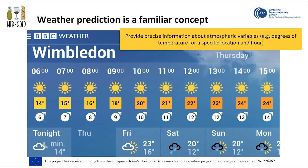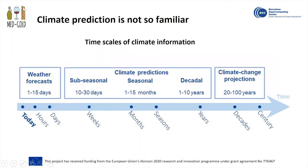Good morning everyone. I would like to start this presentation by showing you a familiar concept: weather prediction. Weather prediction provides precise information about temperature, precipitation or wind for a specific location, at a specific time, and for the following few days. However, it is not possible to predict the weather farther than 10 or 15 days. If we consider the blue arrow as a timeline, the box on the left represents weather prediction, providing information for the following days, and the box on the right corresponds to the climate change projection, which provides information for the next century.